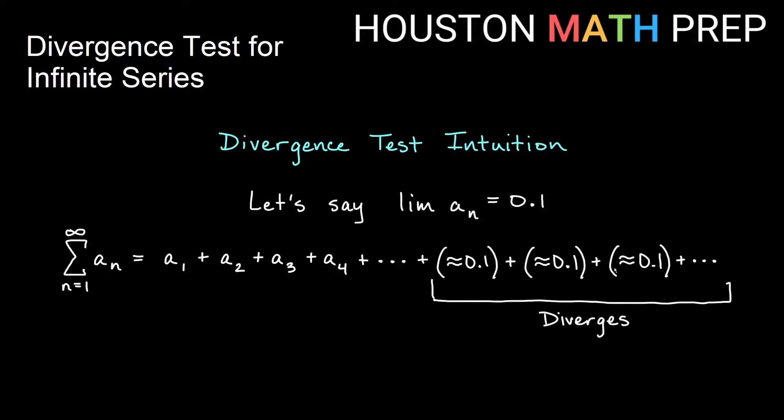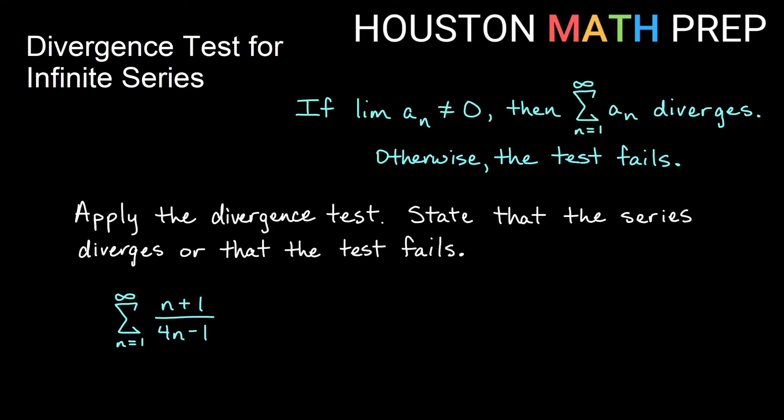So 0.1, 0.2, 0.3, 0.4. I keep adding that way forever, I'm going to get an infinite amount of stuff, no matter what these first several terms were. So unless the limit of the terms is zero, then we know that the sum diverges.